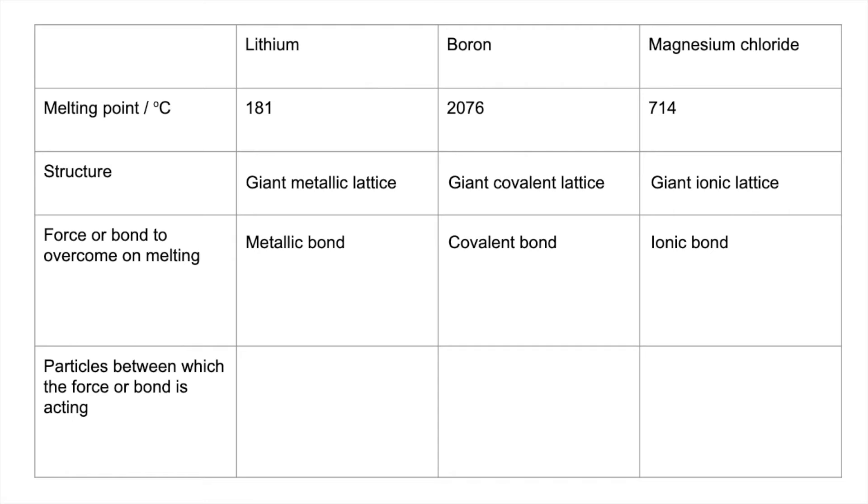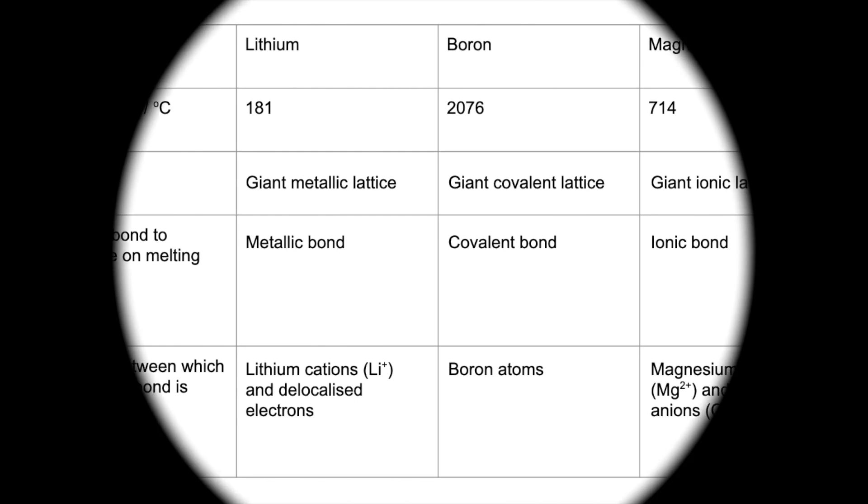And finally, the particles between which the bond in these three cases is acting. In lithium, the particles involved are lithium cations or Li+ ions and delocalized electrons. Boron, it's the boron atoms that the covalent bond exists between. And in magnesium chloride, we've got magnesium cations or Mg2+ ions and chloride anions or Cl- ions.